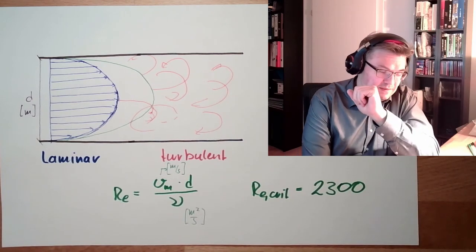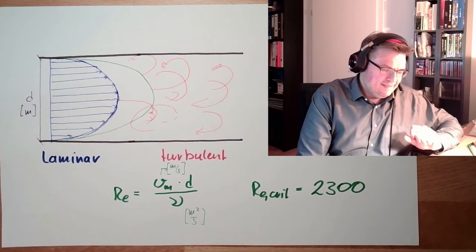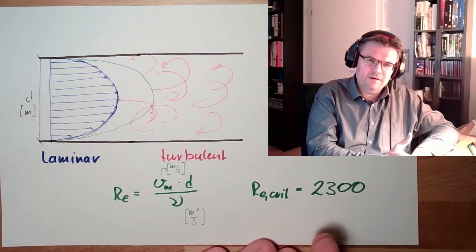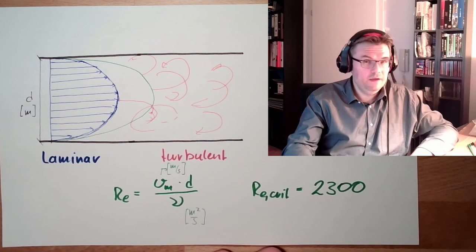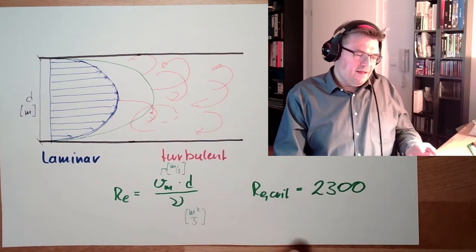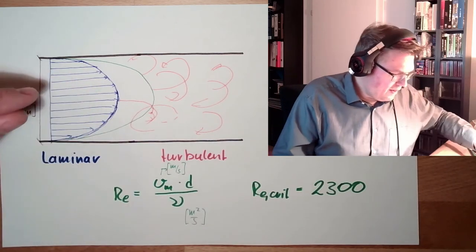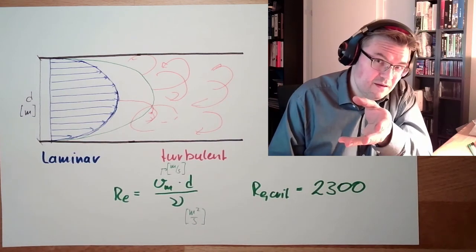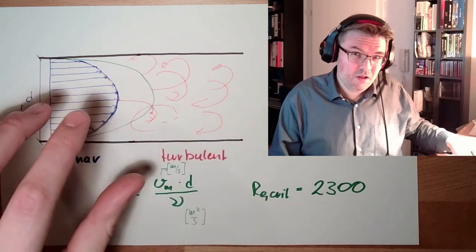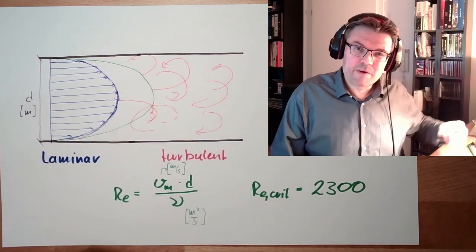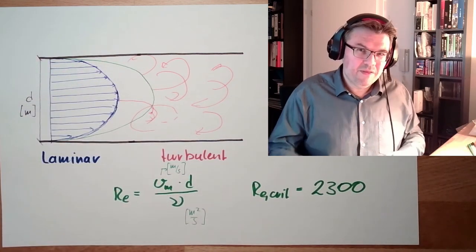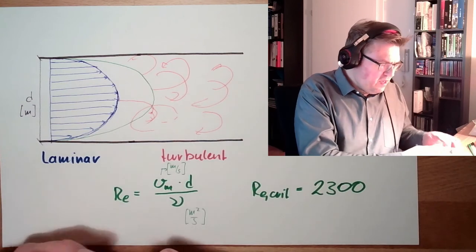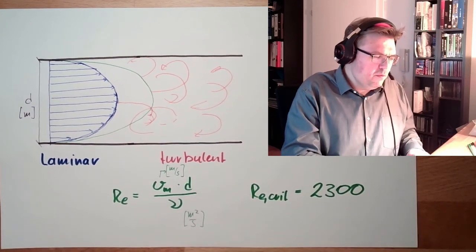Why am I saying chance? You know, it's not a hard border. 2,301, turbulent. 2,299, laminar. It's not that way. There were even laminar streamings were produced with Reynolds number to 100,000. But then, you must be lucky. If everything is smooth, there is no disturbance at all. Then you might get lucky. And this laminar streaming is kept on. But then, there is one little tiny butterfly effect. And suddenly, if we are above this 2300, we will switch to turbulent flow.